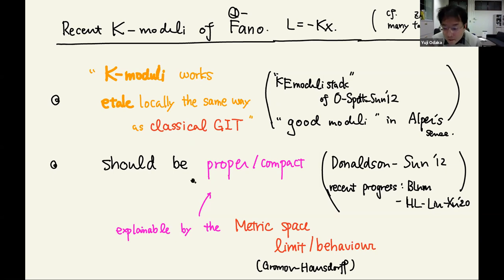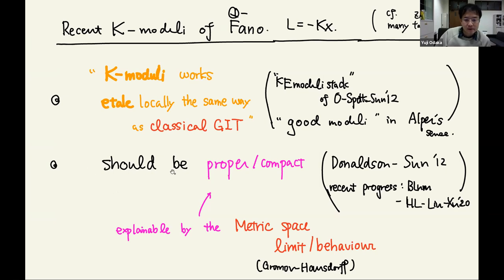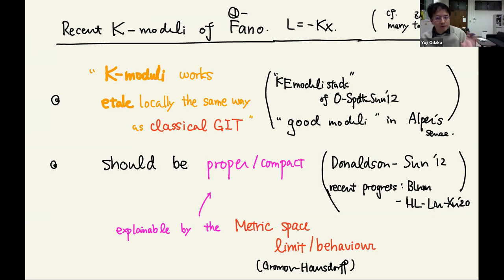It's not proved yet in general — it's conjectured. It's only proved in the smoothable case, and there is recent progress. Donaldson-Sun proved that in the Fano case k-polystability is equivalent to Kähler-Einstein existence — that's a breakthrough — and then one can take a limit of these Kähler-Einstein metrics in a differential geometric way. It converges in the Gromov-Hausdorff sense. Donaldson-Sun then proved the limit is actually an algebraic variety — a really fantastic result.